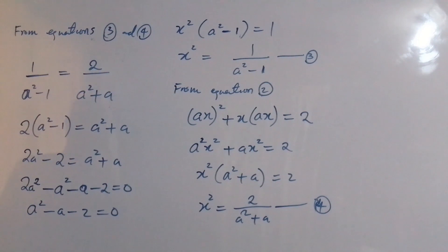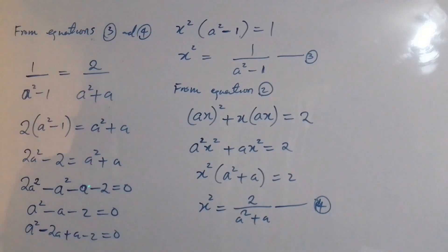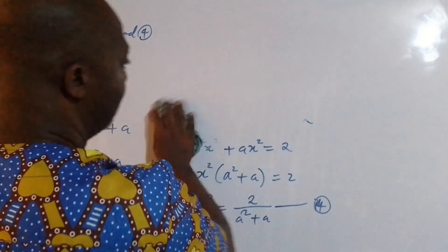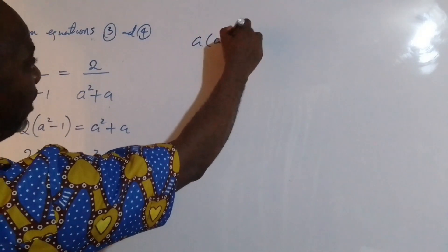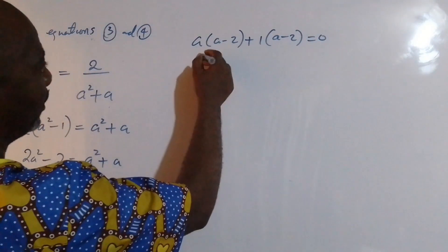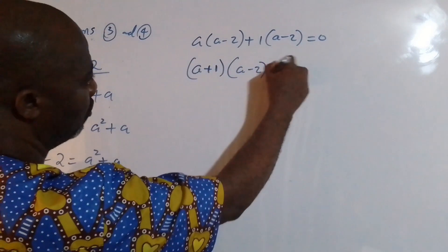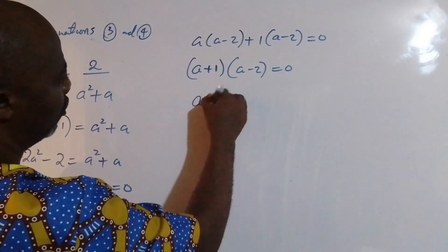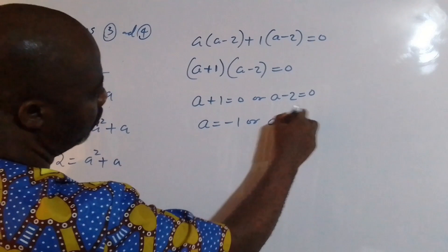Next, I factor this quadratic into its linear factors. Splitting the middle term: a squared minus 2a plus a minus 2 equals 0, which factors as a(a minus 2) plus 1(a minus 2) equals 0, giving (a plus 1)(a minus 2) equals 0. Therefore a plus 1 equals 0 or a minus 2 equals 0, so a equals minus 1 or a equals 2.